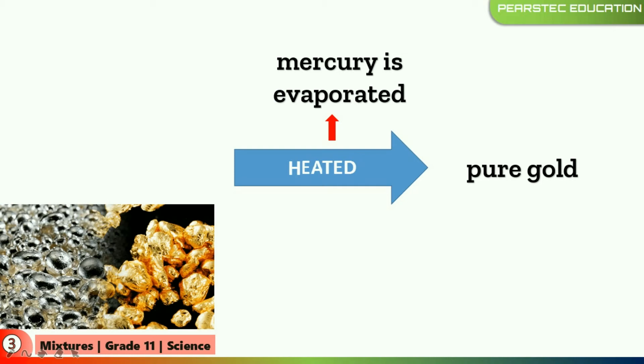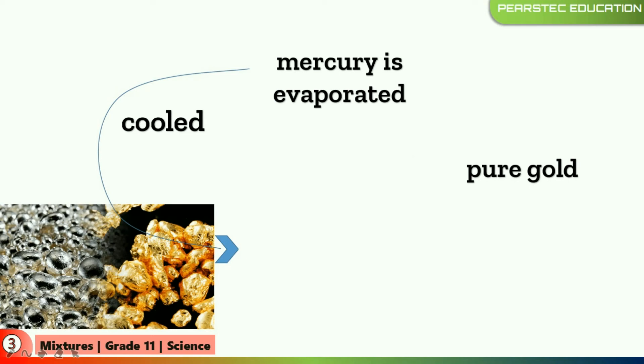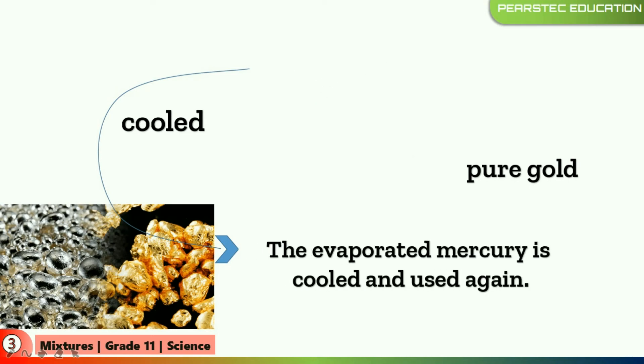Now what happens to the mercury that is getting evaporated? They cool that evaporated mercury and they get it back — the evaporated mercury is cooled and used again. Did you get that idea? When you evaporate things, you can cool them down and get it back also. Then you can get a small idea about evaporating the sugar — can you evaporate the sugar from the sand? If you can evaporate the sugar, it can be separated and the sugar can be obtained back again.